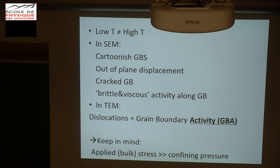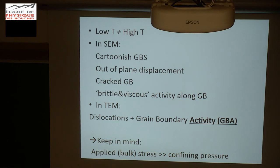So what do we have? We have low temperature, which is different from high temperature. SEM seems to be quite important — we cannot base our conclusions only on EBSD and MTEX. In SEM we get even some very cartoonish evidence of grain boundary sliding. We have this out-of-plane displacement, which can be related to relaxation after we have deformed the sample. We see cracked grain boundaries — something between brittle and viscous activity along the grain boundaries. And in TEM, we have proved that dislocations easily coexist with grain boundary activity, and both can be extreme.